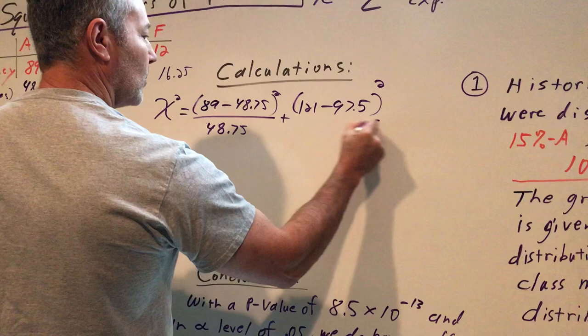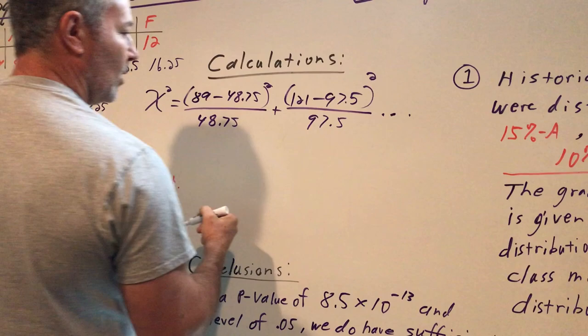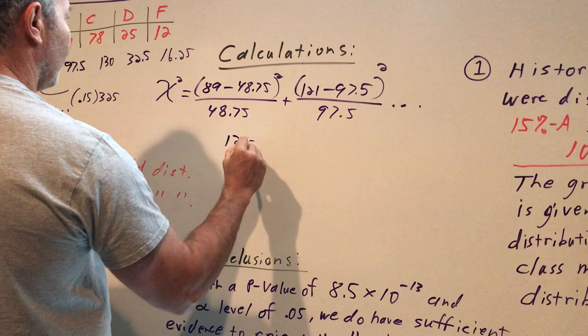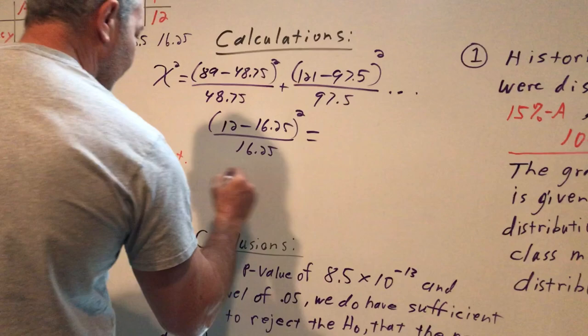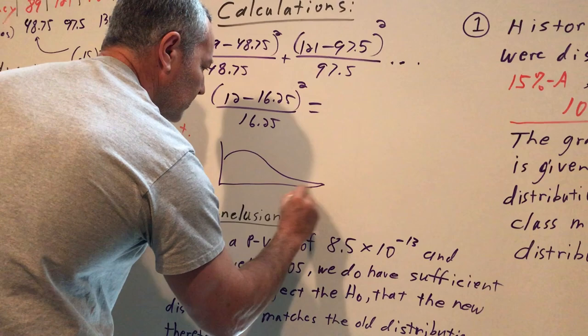And as usual, I only have to write the first two and the last one. The last one are my F's. We have 12 minus 16.25, over 16.25, and then we'll get our chi-squared statistic. We'll also have our picture, and it always will look like this, and we'll put our chi-squared value here.